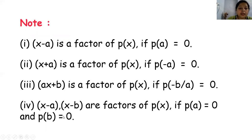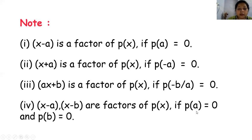And x minus a, x minus b are factors of p(x) if p(a) equal to 0 and p(b) equal to 0. अगर यह दोनों ही factors हैं p(x) के, तो उस case में दोनों ही के case में divide करने पर remainder हमारे 0 आएंगे.